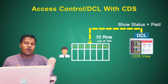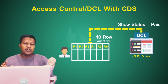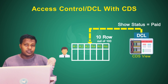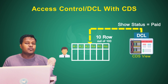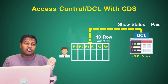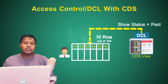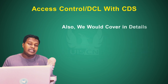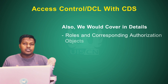Access control plays an important role when we try to implement a CDS view in a real-life use case, because most of the time the data you are exposing should not be shown to all users. Only limited users who have the authorization or access should be able to see that data.